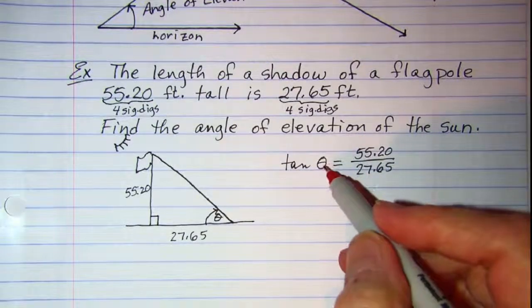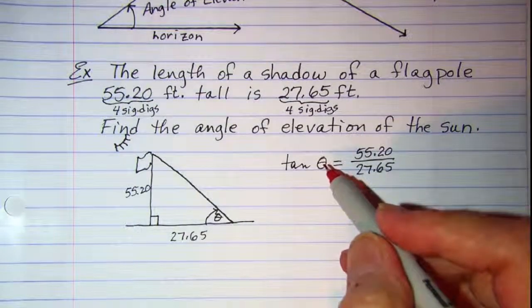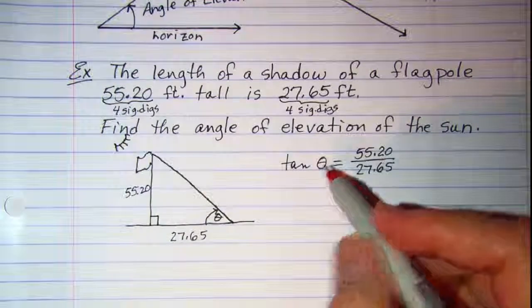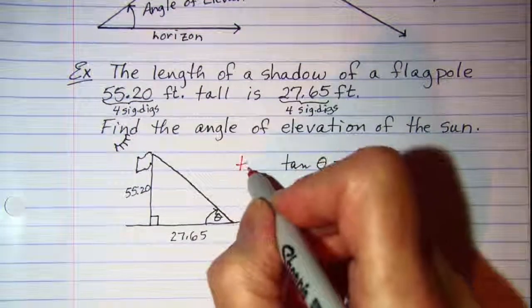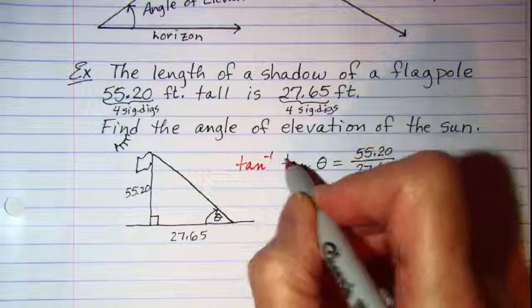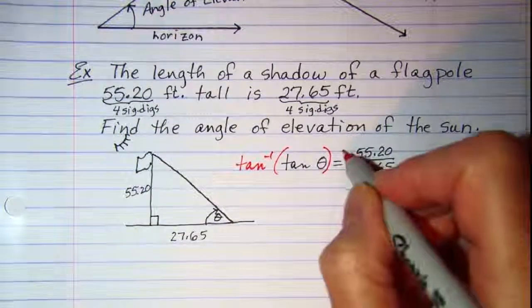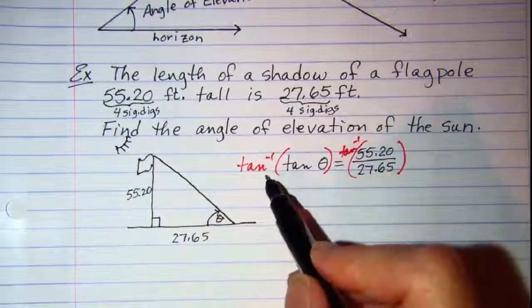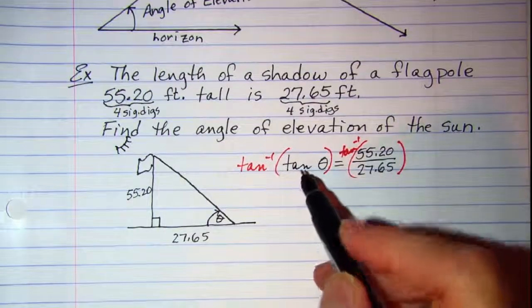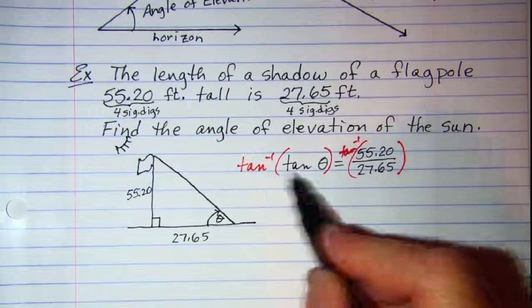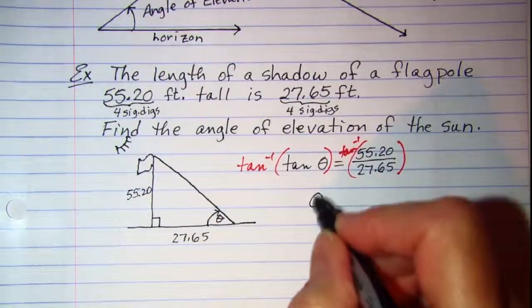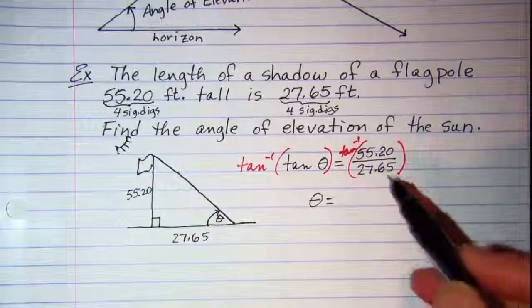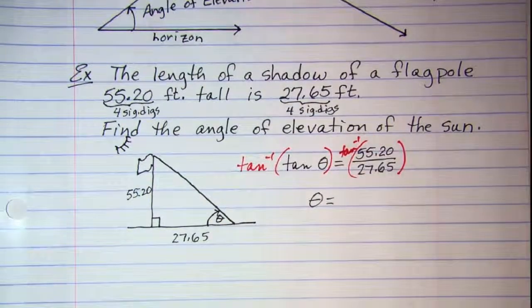Now whenever we don't know the angle, we have to use our inverse trig functions. So we will use inverse tangent on both sides. When you inverse tangent the tangent, those go away. And you have just theta equals, and then we need to do this on our calculator.